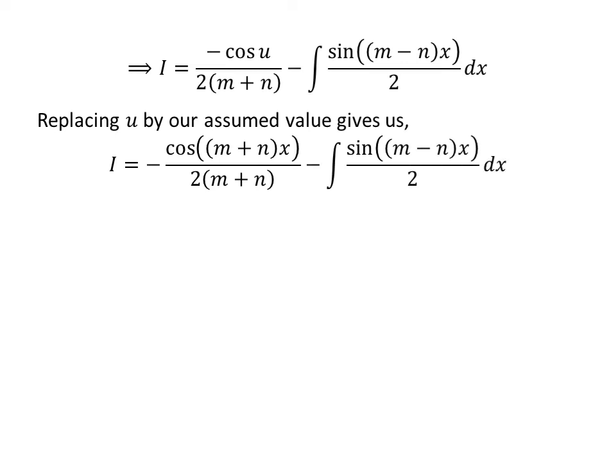Now let us substitute u back by its value assumed earlier. So I is equal to minus cosine of m plus n times x, upon 2 times m plus n, minus the integral of sine of m minus n times x upon 2, with respect to x.